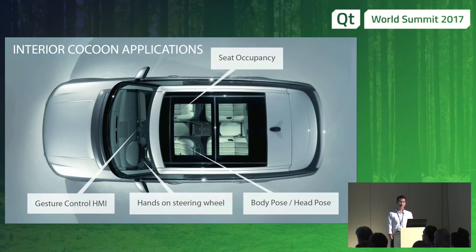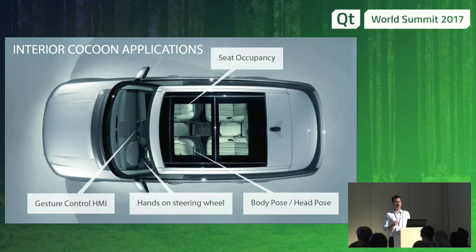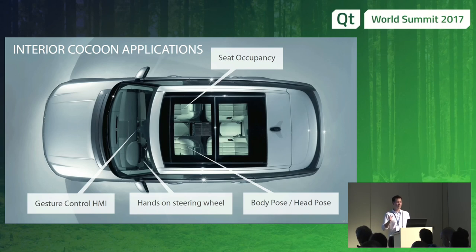Here are some of the applications we address today. One is center console gesture control HMIs. One is hands-on-steering-wheel detection — why do we need to understand if the hands are on the steering wheel? The next level of driving is semi-autonomous or fully autonomous driving. We're thinking about a system that automatically detects if the driver is having both hands on the steering wheel, and if not, the car should automatically take over. Even if we do a manual takeover, we need to understand if the driver is able to drive — this is where hands-on-steering-wheel detection is very helpful. The third region is body pose and head pose estimation. From my line of sight and the direction I'm looking, I can estimate to some extent whether I'm distracted or paying attention to the road.